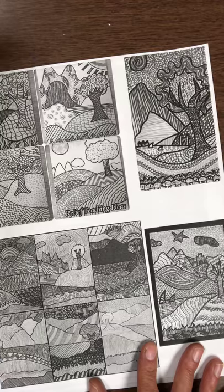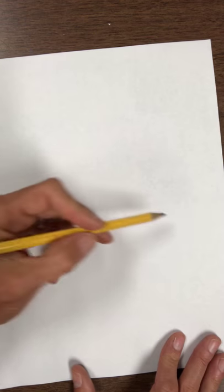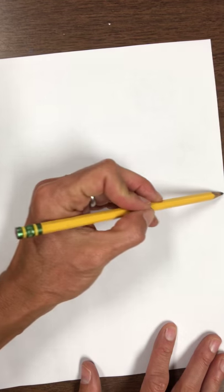So it can vary on how you want to do it and when you are drawing the first thing I want you to do on a larger piece of paper, it can be vertical or horizontal, is you're going to draw that horizon line first.